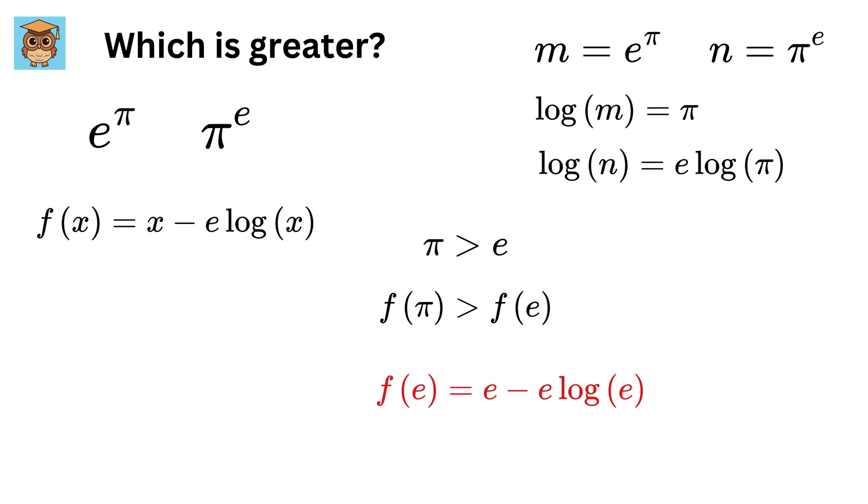f(e) equals e minus e times log(e), which will be 0 as log(e) is 1. So f(π) will be greater than 0. Now f(π) will be π minus e times log(π).